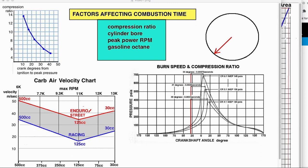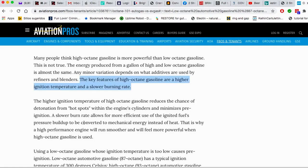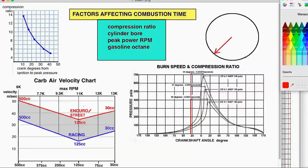But if you don't want to believe me, look at this site right here from Aviation Pros. The key features of high octane gasoline are a higher ignition temperature and a slower burning rate. You just can't get any more specific than that.